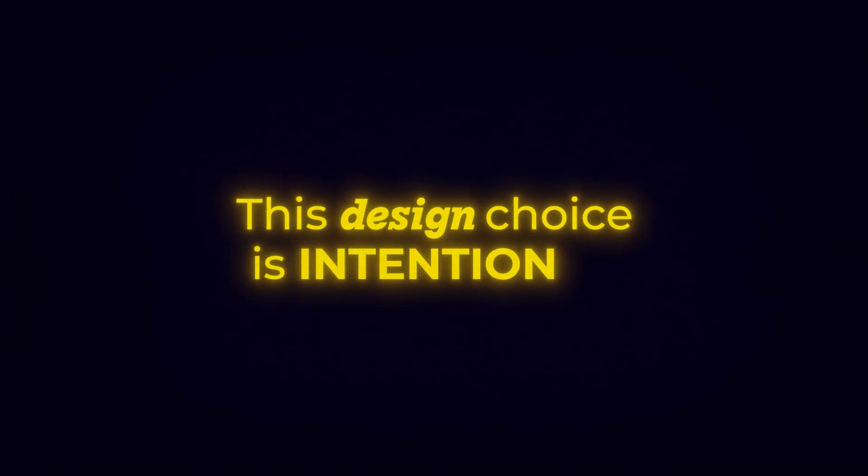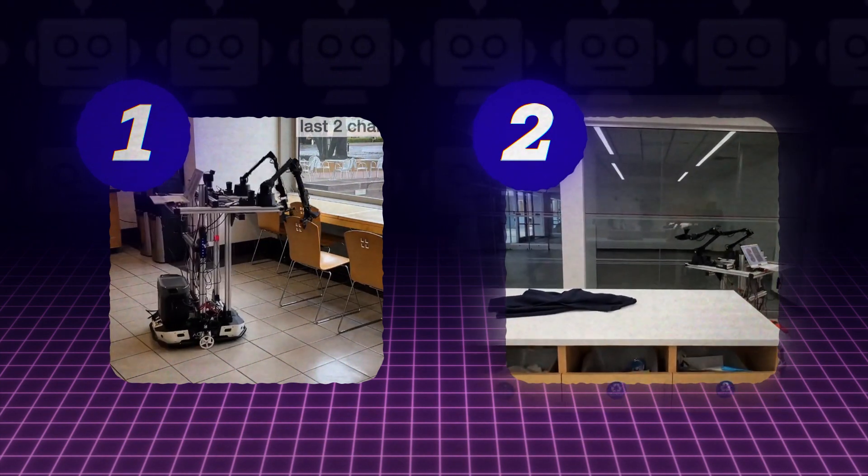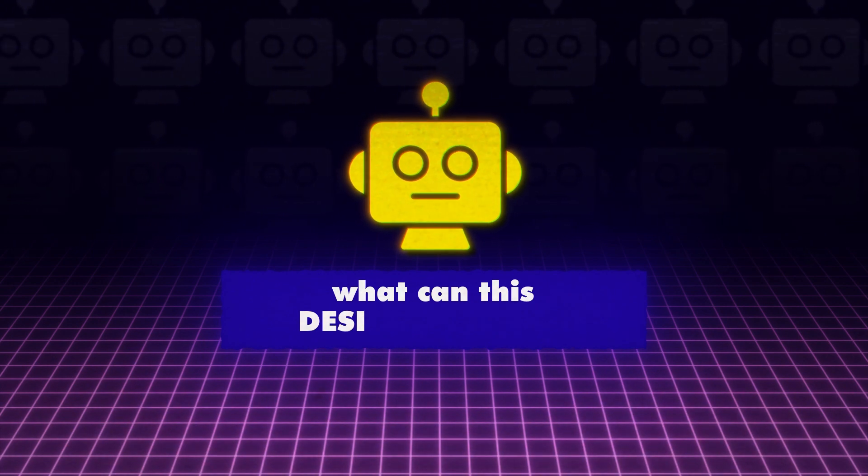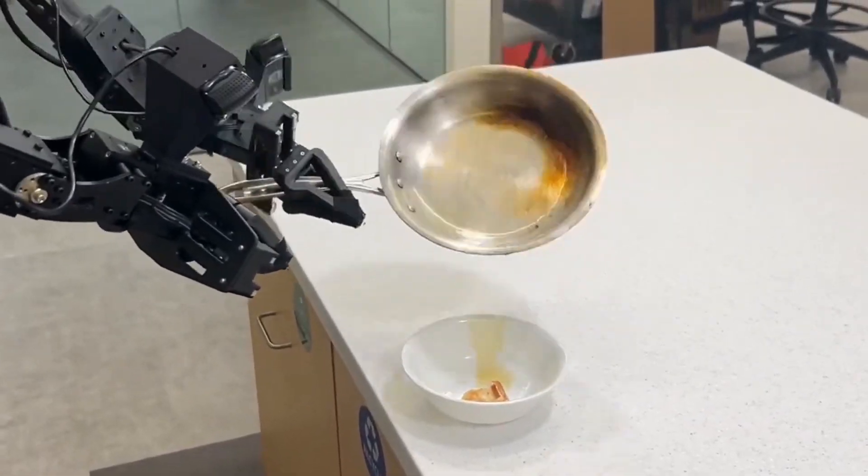This design choice is intentional, aiming to create a robot that can seamlessly integrate into our daily lives, working alongside us in a way that feels natural. With 50 demonstrations of a set task, the Mobile Aloha can perform various tasks.